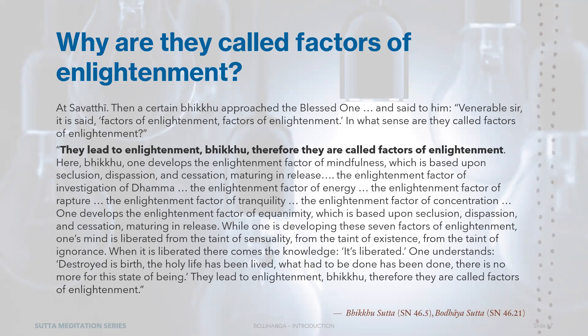The Buddha continues, explaining that one develops the enlightenment factor of mindfulness (Sati Sambhojanga), which is based upon seclusion, dispassion, and cessation, maturing and release. The same applies for the other six factors: investigation of Dhamma, energy, rapture, tranquility, concentration, and equanimity — all based upon seclusion, dispassion, cessation, maturing and release. While one is developing these seven factors of enlightenment, one's mind is liberated from the taint of sensuality, the taint of existence, and the taint of ignorance. When it is liberated, there comes the knowledge: 'It is liberated. Destroyed is birth. The holy life has been lived. What had to be done has been done. There is no more for this state of being.' They lead to enlightenment — therefore they are called factors of enlightenment.